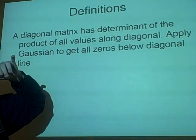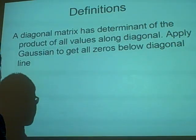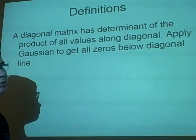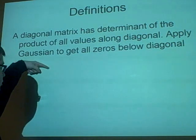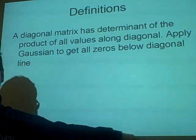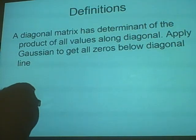So, what we have is, if you have a diagonal matrix, the determinant is the product of all the values going down the diagonal. That's basically what that says.